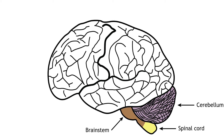The brainstem is located between the cerebrum and the spinal cord. It is important for regulating critical functions like heart rate, breathing, and sleep. It is also the location of most of the cranial nerves. The spinal cord, which is part of the central nervous system but not part of the brain, is responsible for receiving sensory information from the body and sending motor information to the body. Involuntary motor reflexes are also a function of the spinal cord, indicating that the spinal cord can process information independently from the brain.